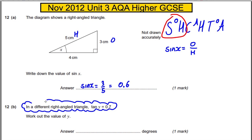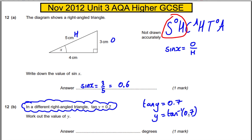In a different right angle triangle, tan y is 0.7 — what is the value of y? You know that if tan of the angle is 0.7, then the angle must be the inverse tan of 0.7. Keeping your calculator in degrees mode, if you type in inverse tan of 0.7, you get 35.0 degrees to one decimal place. That's a nice straightforward question for two marks.